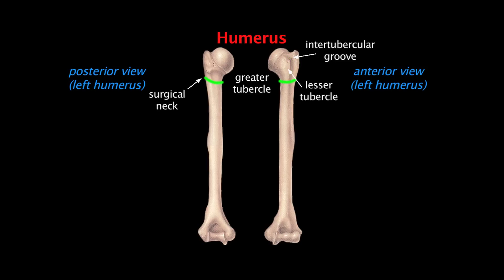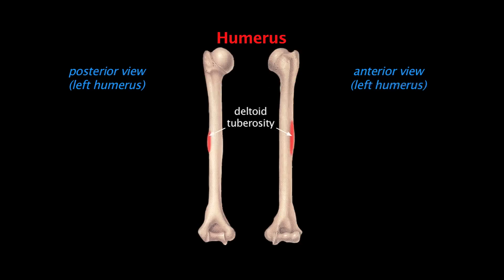Just distal to the tubercles is the surgical neck of the humerus, which is a common site for fractures. Moving down the shaft of the humerus, about midway on the lateral surface, you'll find a roughened prominence called the deltoid tuberosity, which is the insertion point of the deltoid on the humerus. Running next to the deltoid tuberosity on its posterior side is the shallow radial groove, which is the path for the radial nerve and deep artery of the arm.